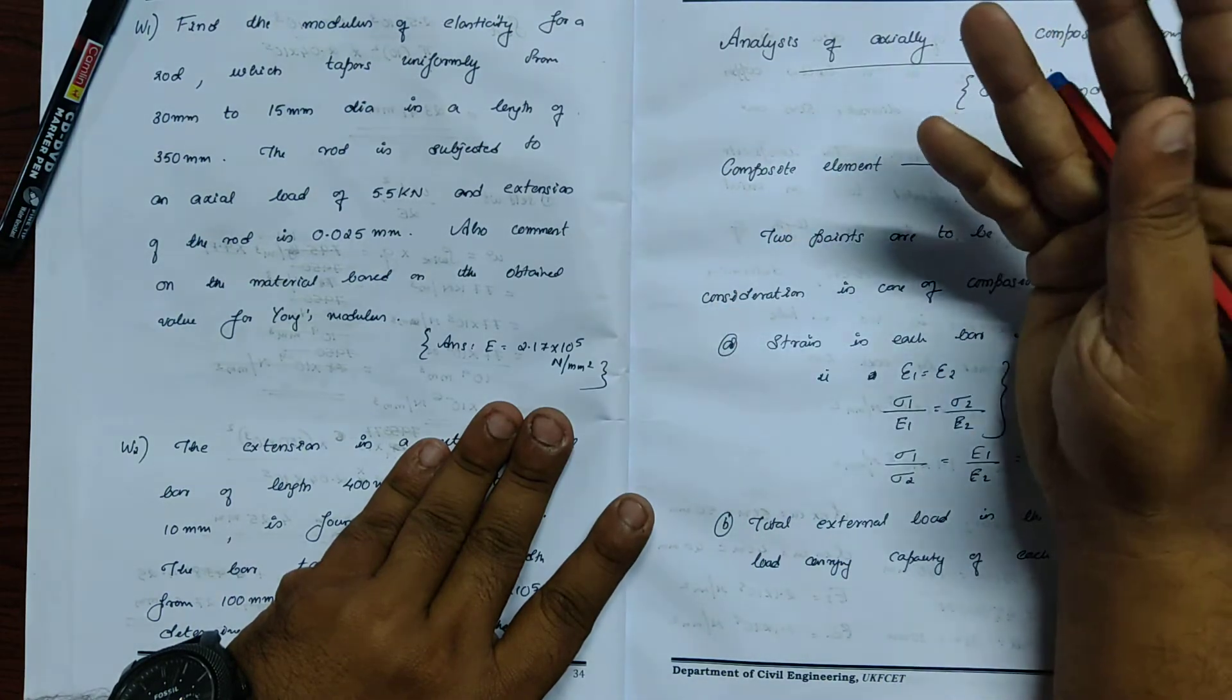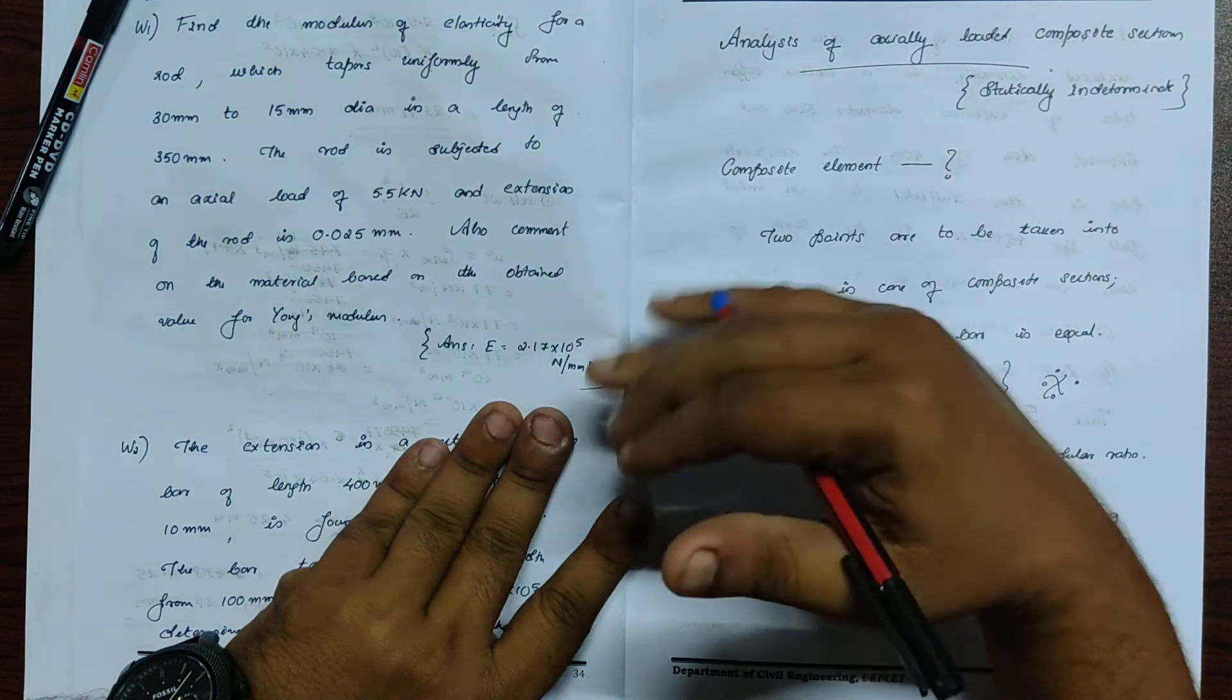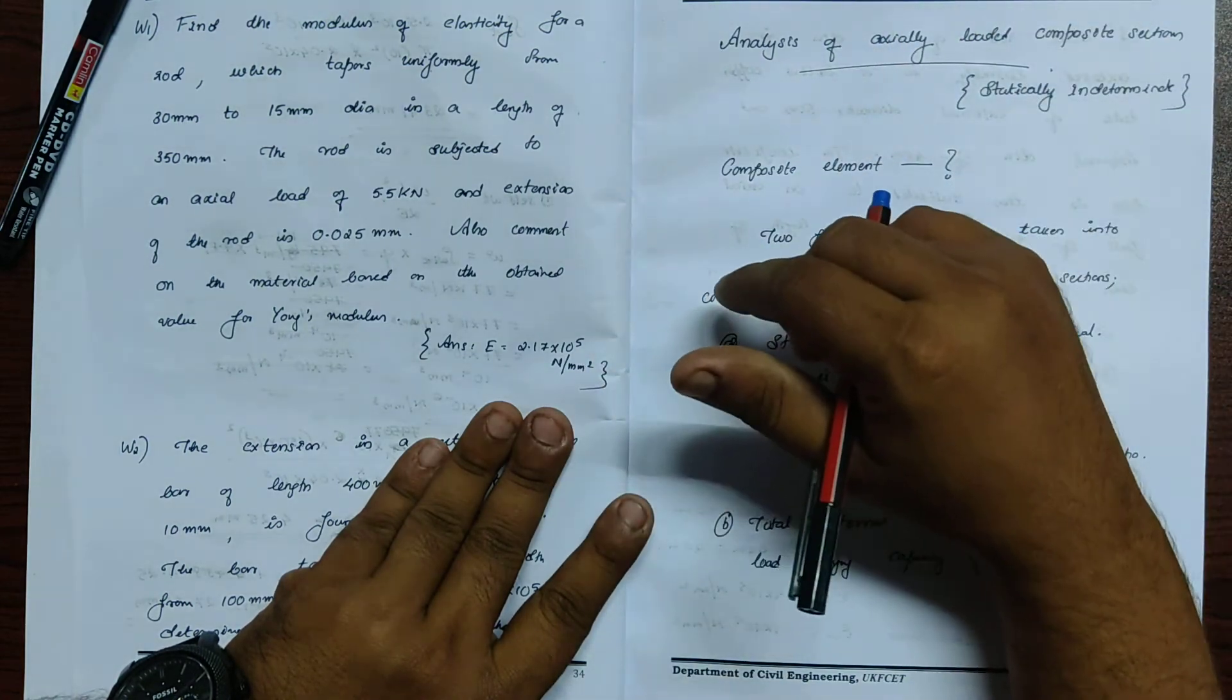When comparing values like 2 point something and 1 point something, we can find if the material is steel or aluminum.